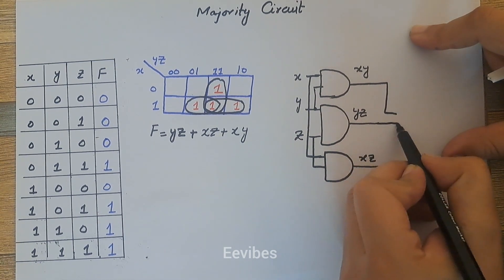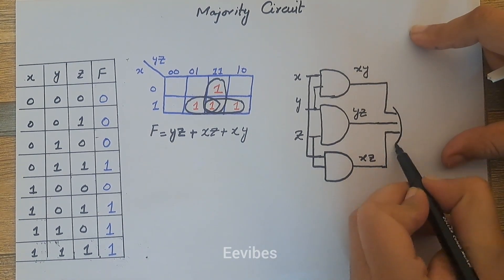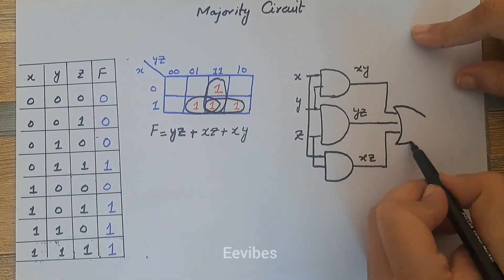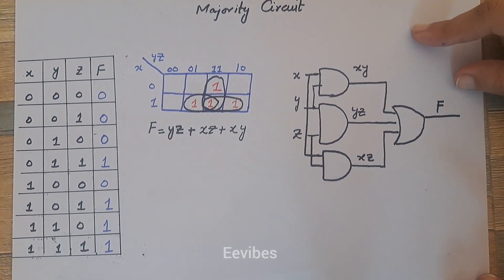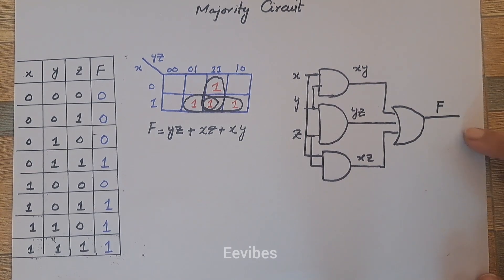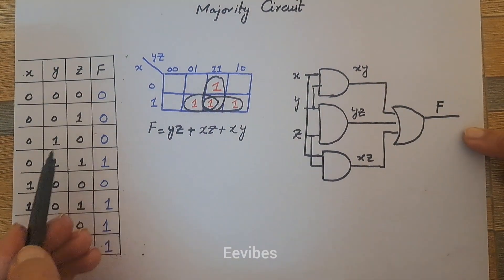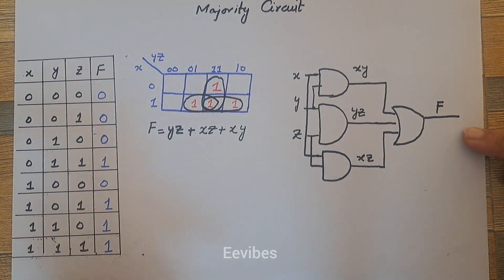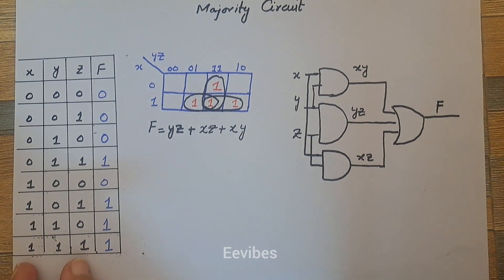And finally you have to OR these terms, and the output function will actually give you the output value whenever the number of ones will be more as compared to the number of zeros in the combination of the inputs. Thank you for watching.